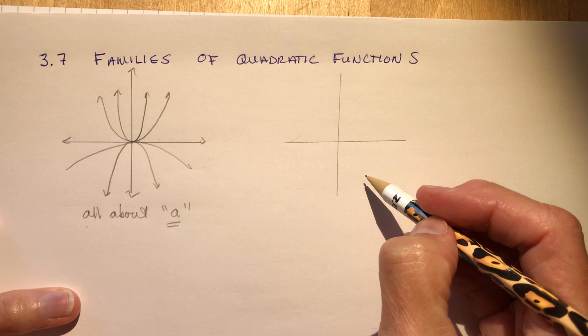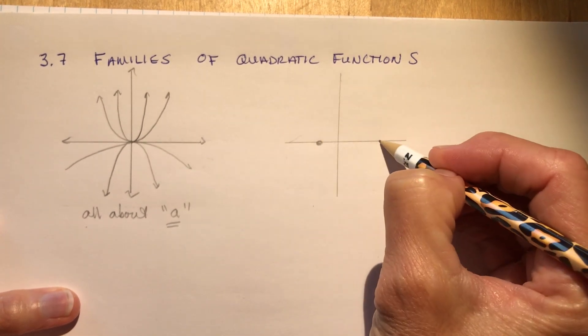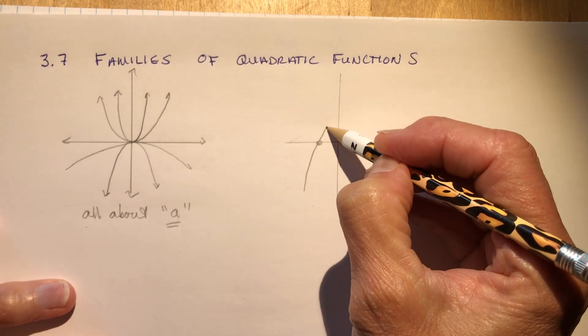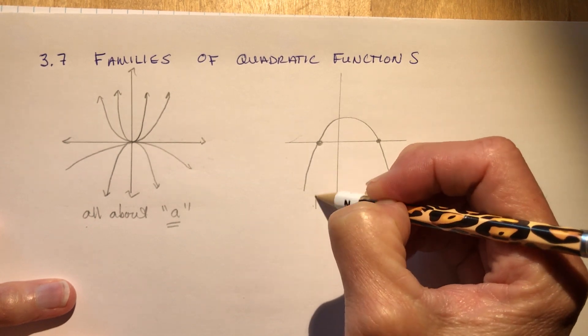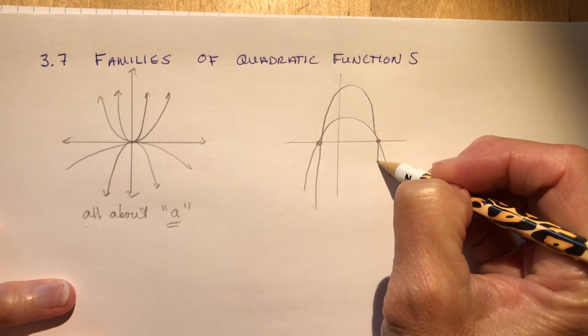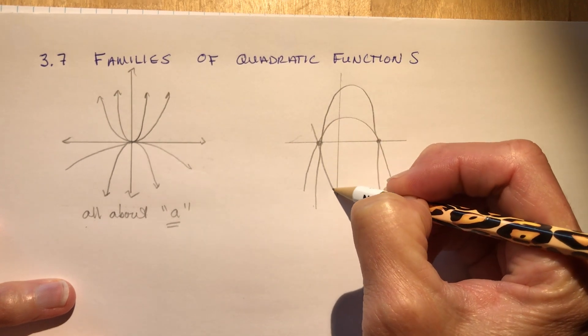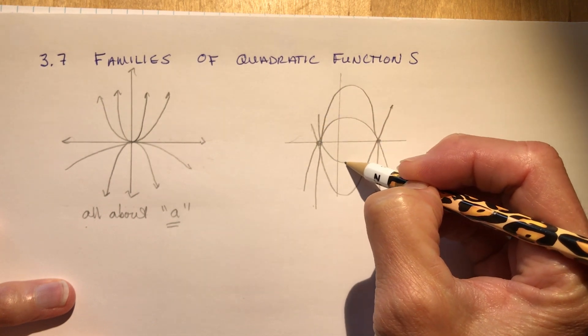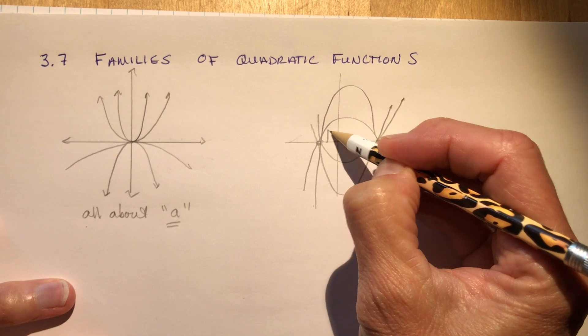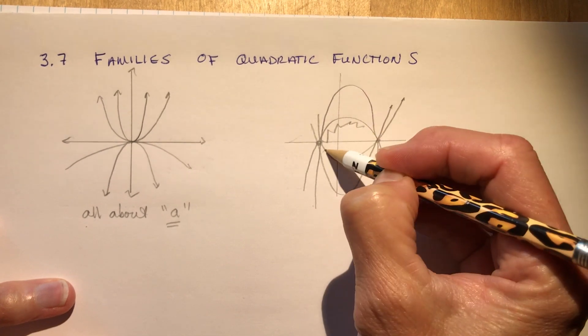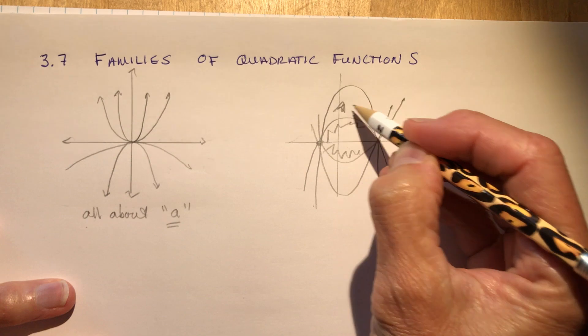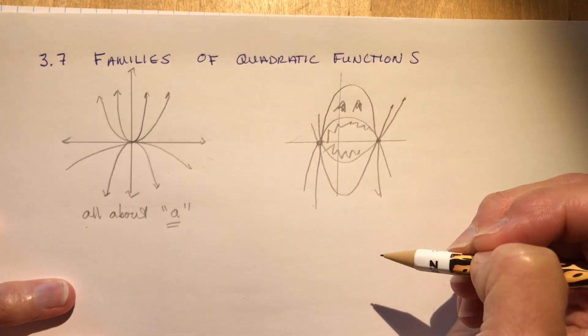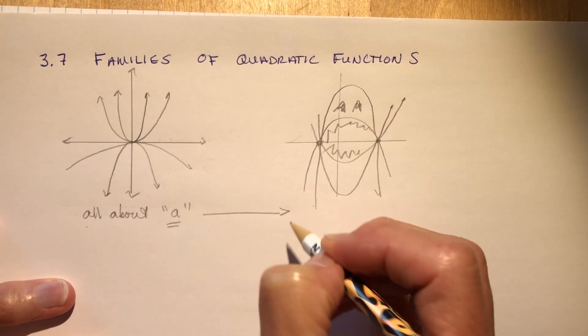So similarly, if I have, let's say I have two zeros, one here, one here, and I say how many parabolas can I draw through these two points? You could go like this, or you could make it really steep like this, or you could make it like this, or you could make it like this. And then, as I say to my class, like a big shark. There are lots and lots of parabolas that can be drawn through these two zeros. So again, it's all about the A value.